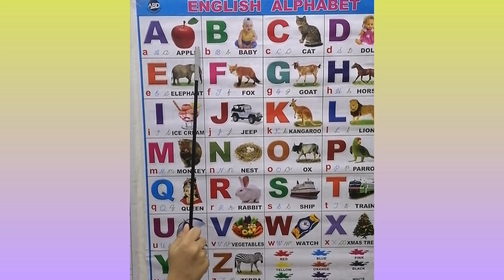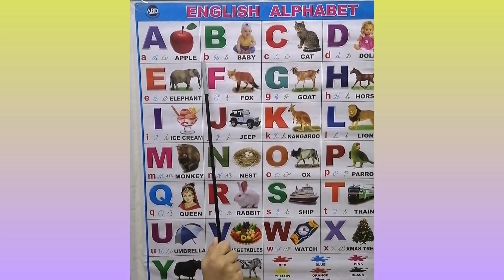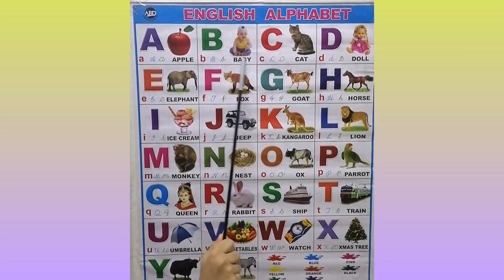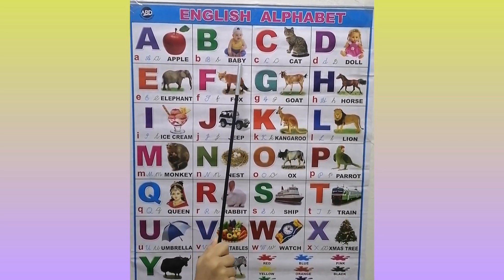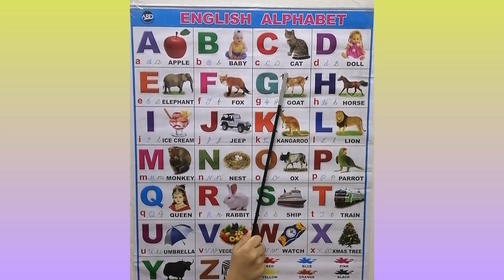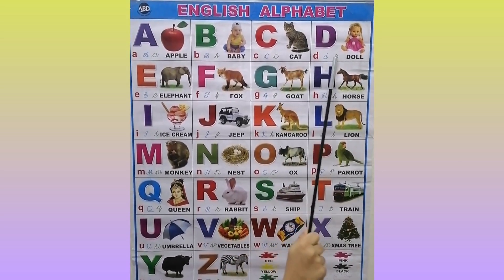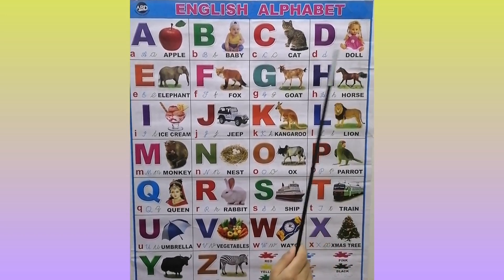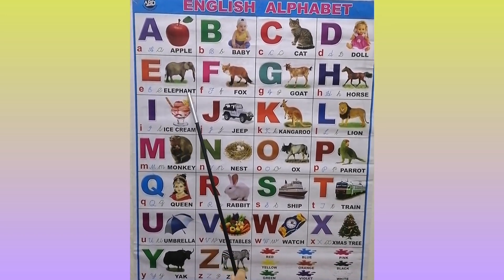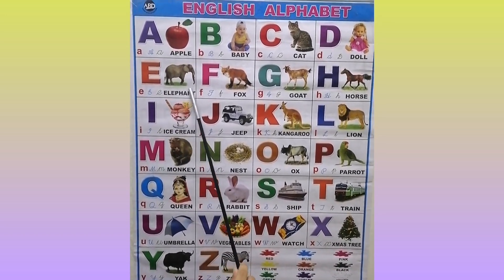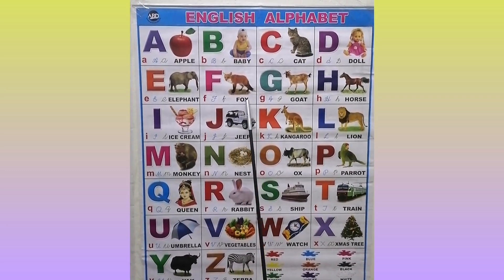B for apple. B for baby. B for cat. B for doll. B for elephant. B for fox.